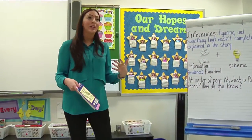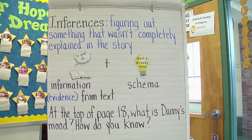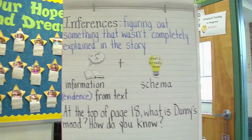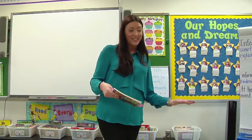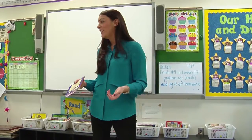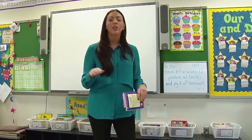Today you're going to be making inferences. An inference is when you figure out something that wasn't completely explained in the story, and you really become a reading detective. The two things you need in order to figure out an inference are information from the text — we call that evidence — and you're also going to be using your schema, which means things you already know. You have a lot of information you've already learned about the Iroquois families and the Iroquois people, so you're really going to incorporate that today.